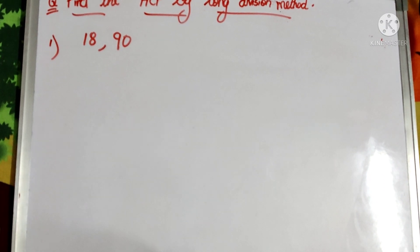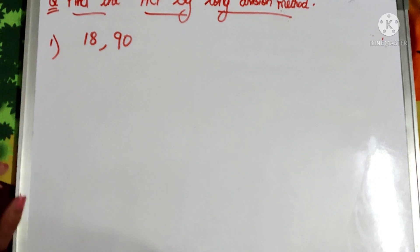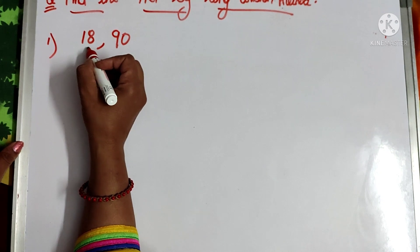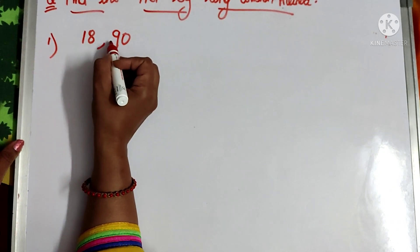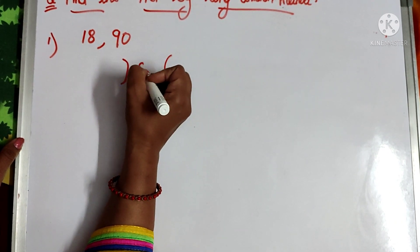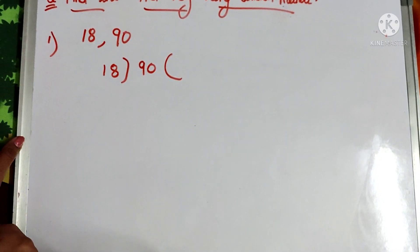Let us solve an example: find the HCF by long division method of 18 and 90. We have to find the HCF by long division method. The first step is to divide the greater number by the smaller number. 90 is the greater number and we divide it by the smaller number, 18.